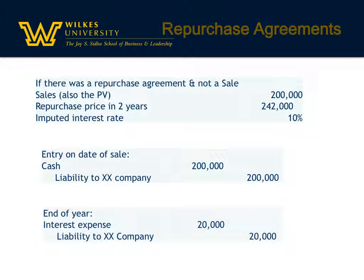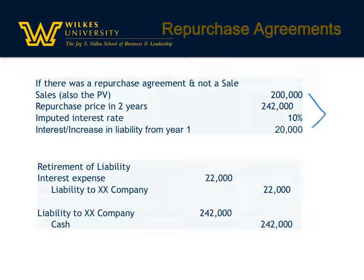At the end of one year, principal times rate times time — $200,000 times 10% times one year — gives interest of $20,000. That's a debit to interest expense and a credit to the liability. Notice the liability is now $220,000. At the end of year two, interest expense is $22,000 — so you debit interest expense and credit the liability for $22,000. Now it's time to pay, so you debit the liability to eliminate it and credit cash for $242,000. Again, this is a financing agreement — it's really not a sale, so there really isn't revenue to recognize.